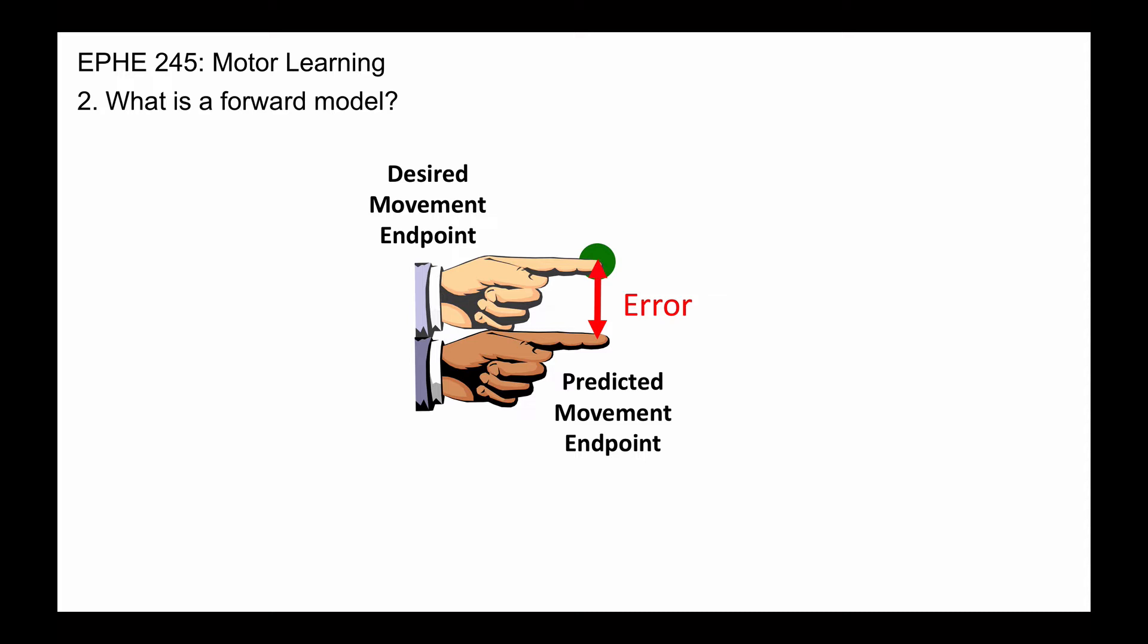that is error, and the forward model works to reduce that error while you are moving so you don't miss the target and you have smooth movements.